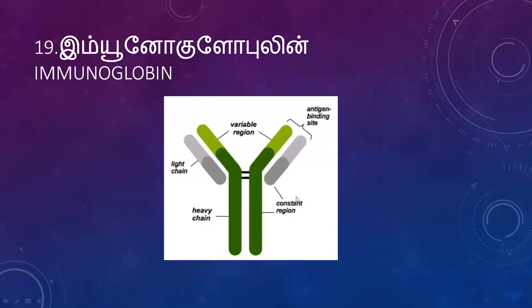Functions of antibodies include agglutination, opsonization, and neutralization. There are five types of immunoglobulins: IgA, IgD, IgE, IgG, and IgM. At the time of allergy, immunoglobulin E (IgE) content is increased.